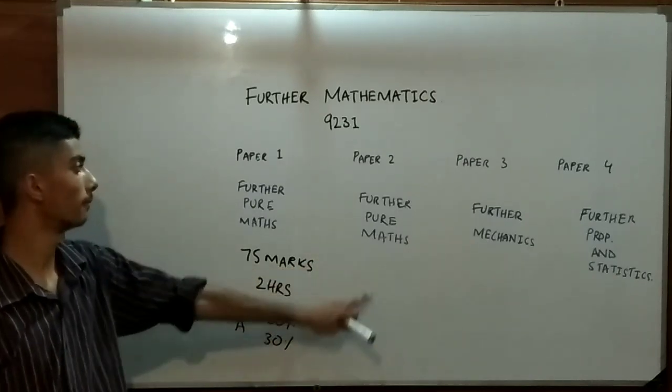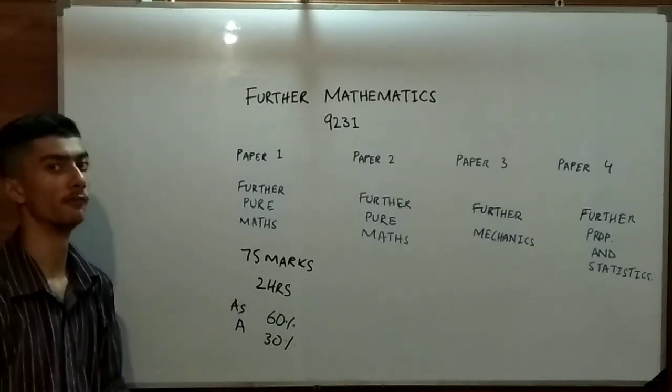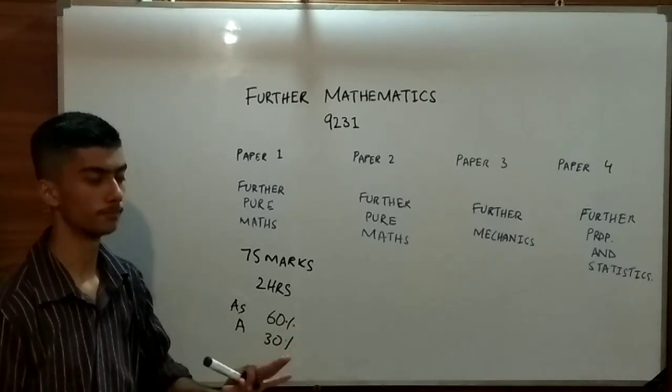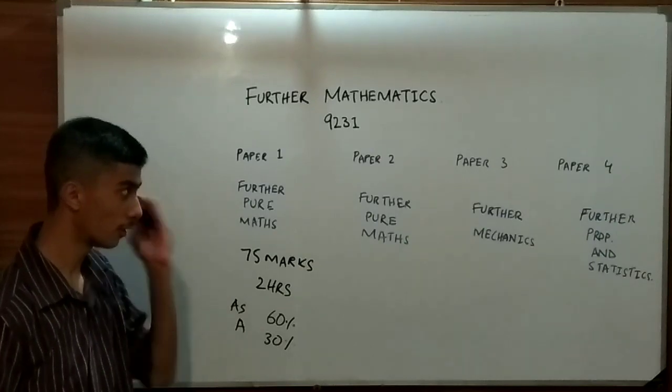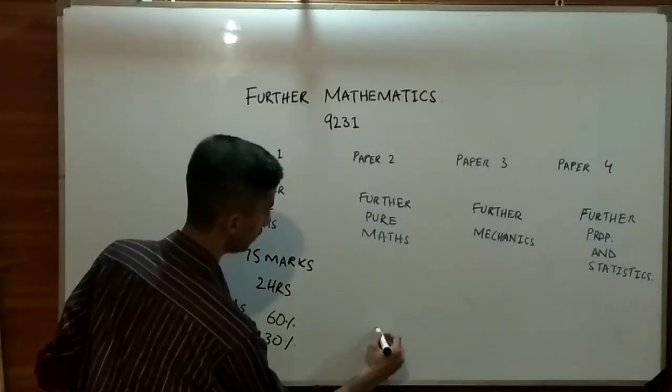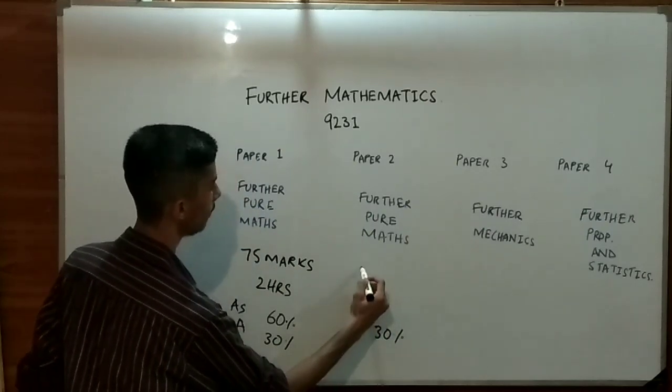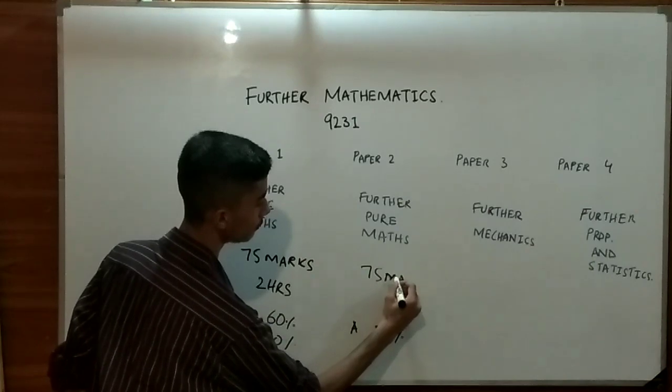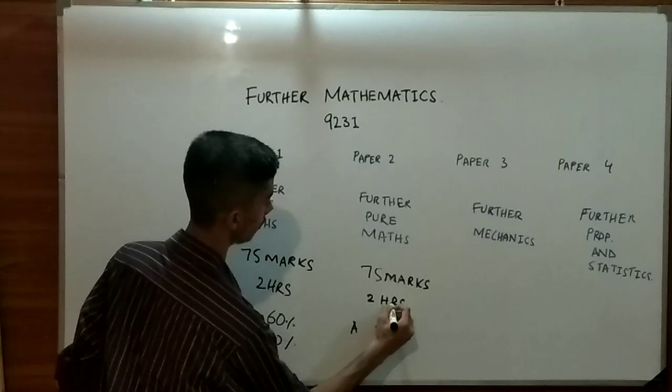The further pure mathematics paper 2 is only for completing a whole A-level. This paper can not be opted at the stage of your AS level. This requires a complete A-level. This paper is of 30 percentage. It has same ratio as paper 1: 75 marks and it has a 2 hours duration.